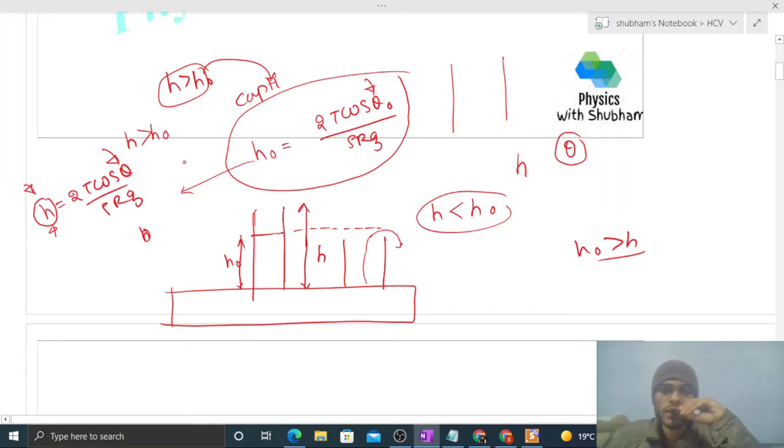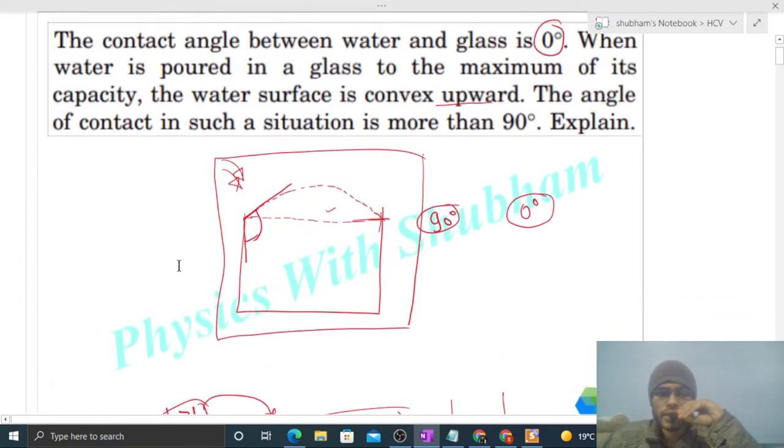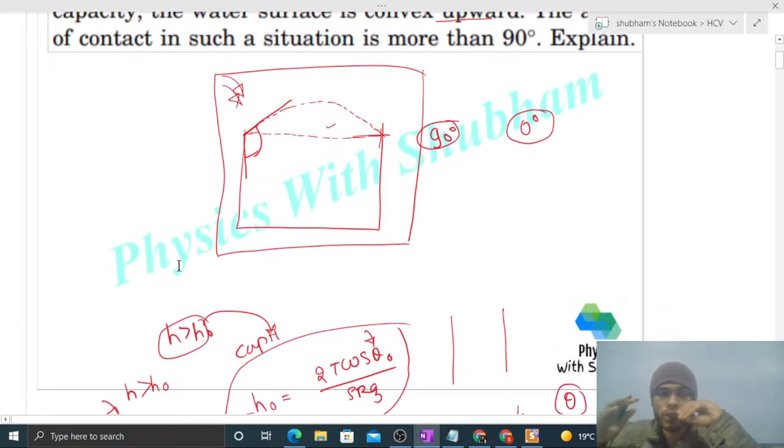So in this case, the contact angle can adjust itself. That's why the surface, the top surface, becomes convex, and the contact angle will be more than 90 degrees. And this happens because the free surface of water behaves like a stretched membrane, right?